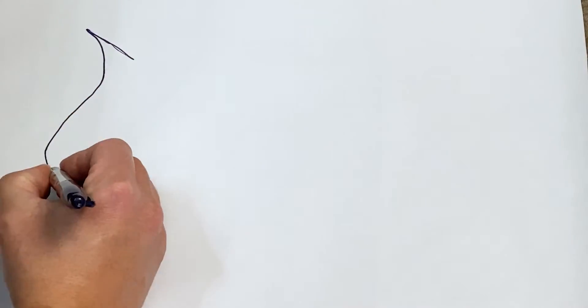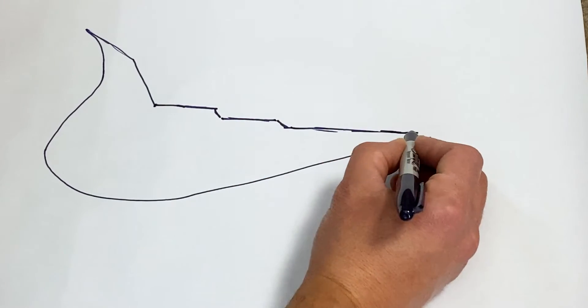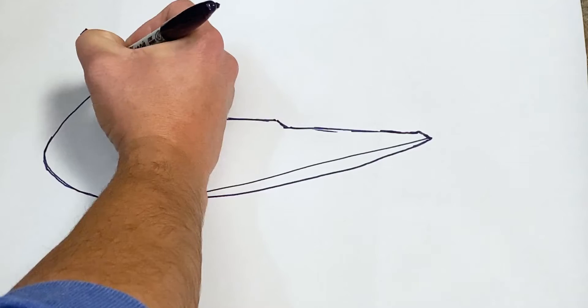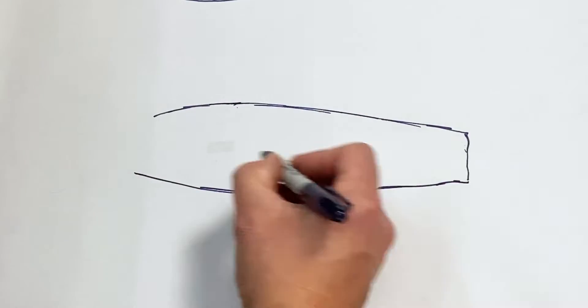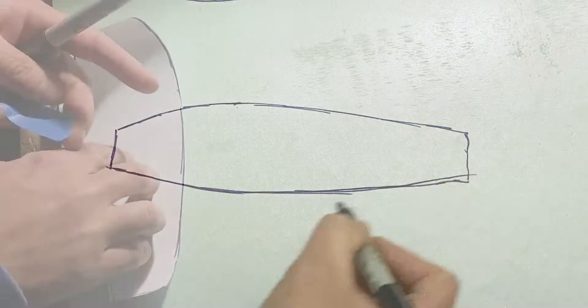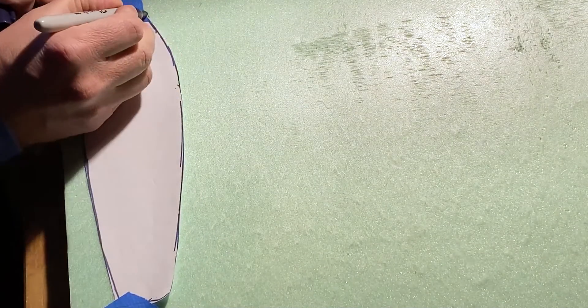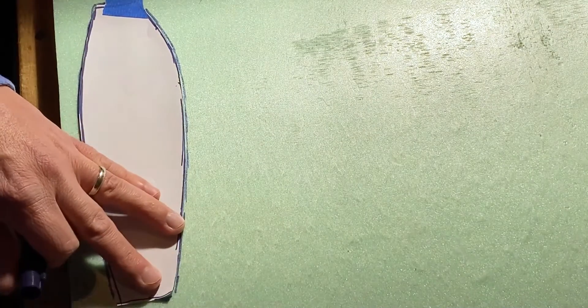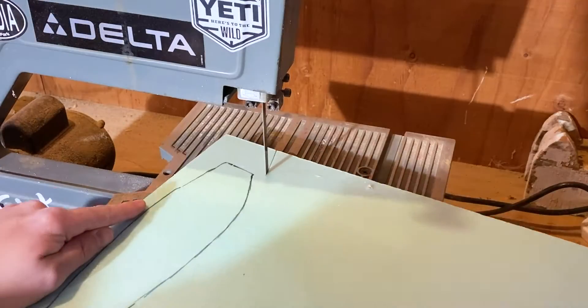I've made hulls before and I use XPS foam insulation. Basically, I make templates first. That's a top-down template. And I'm going to cut out blanks and stack them on top of each other. I'll build up the body of the ship this way.